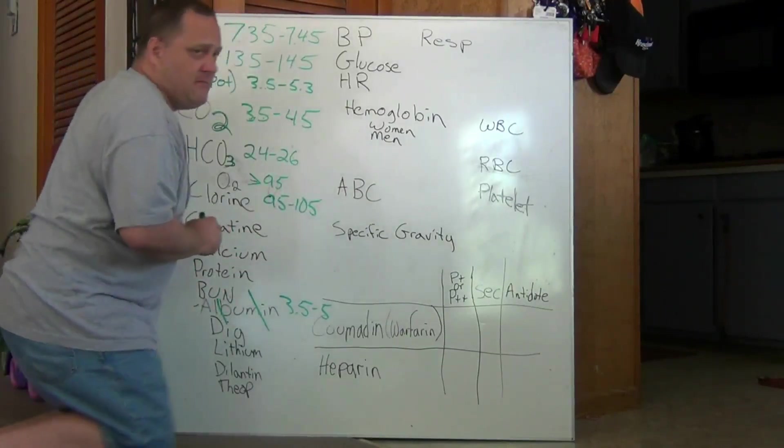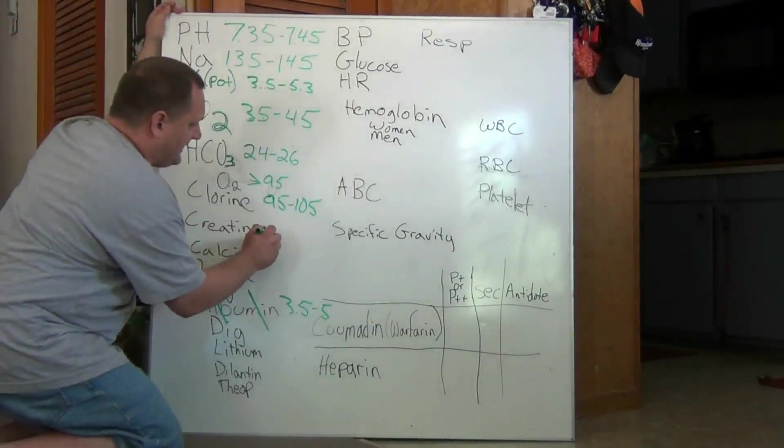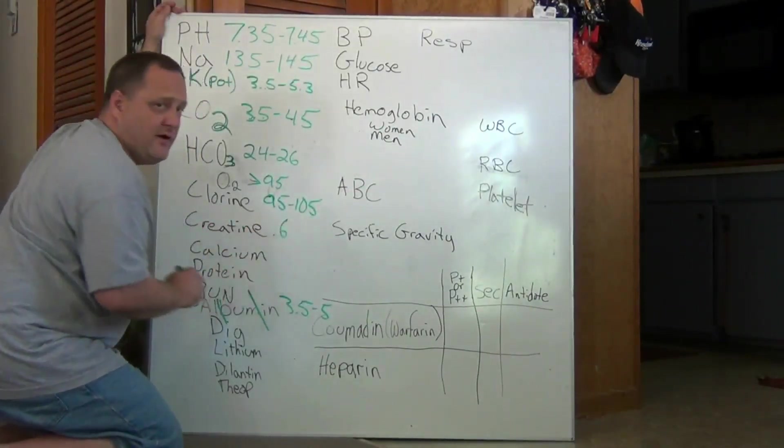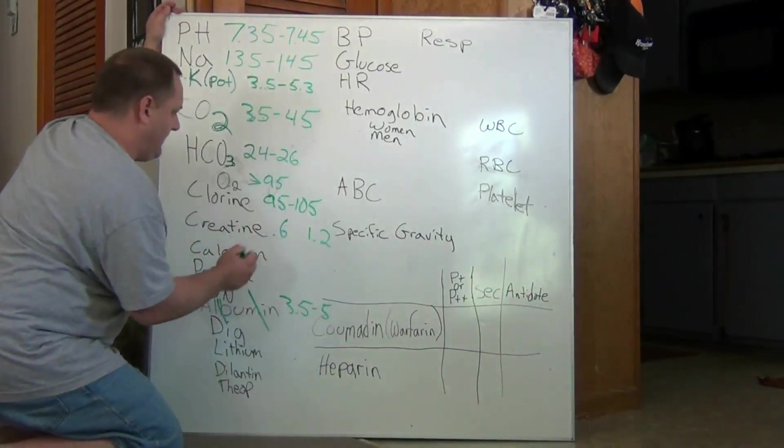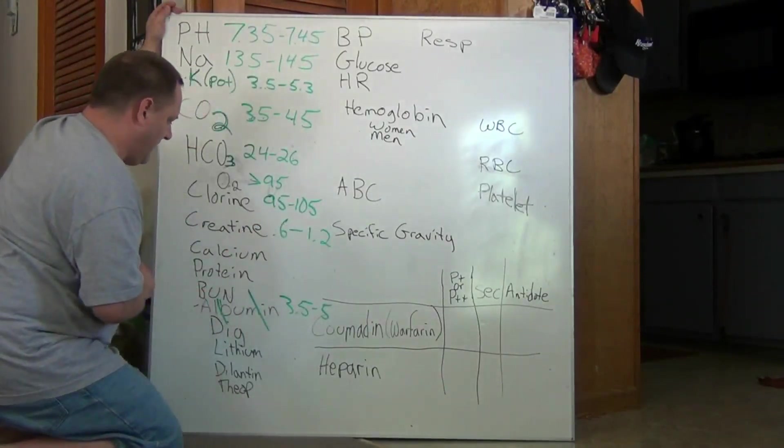Now we'll just have to remember creatine here starts with 0.6 and if we double that number we get 1.2. So the typical range for creatine would be 0.6 to 1.2.